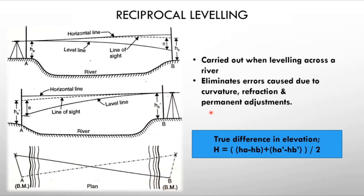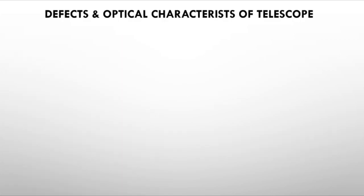Reciprocal leveling eliminates errors due to curvature, refraction, and permanent adjustments. The formula uses HA, HB from position A and HB', HA' from position B to compute the true elevation difference. There are also defects in the telescope: spherical aberration (when rays from a curved lens do not coincide at a point) and chromatic aberration (when white light splits into colors through a lens, corrected using an achromatic lens combination).